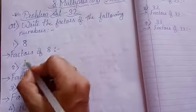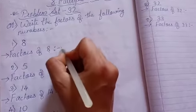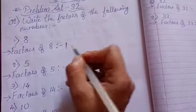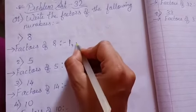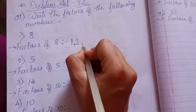So suppose factor of 8, that means the number 8 is going in one table. 1 times 8 is 8. Same way in 2 table, 8 goes. 2 times 4 is 8. So in 2 table, 8 goes.